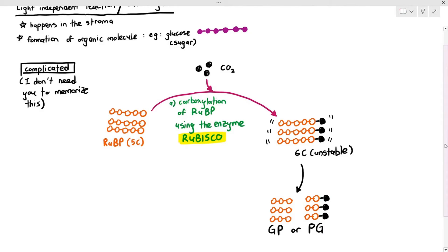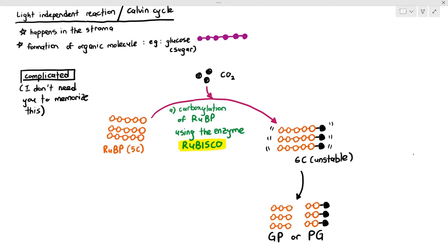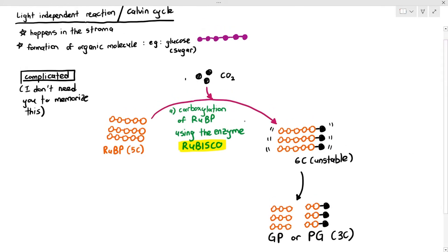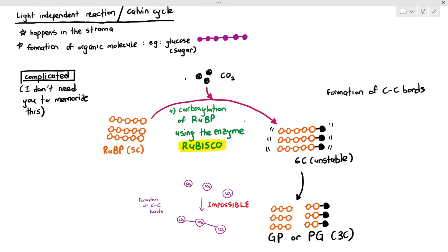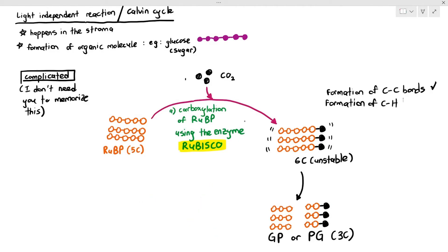At this point, the carbon-carbon bonds have technically already been formed. You didn't join the carbon dioxide molecules directly to each other, but you have formed the three-carbon molecule indirectly. That is how plants bypass the problem of the highly stable carbon dioxide molecules. Once the carbon-carbon bonds are formed, the next step is the formation of carbon-hydrogen bonds.